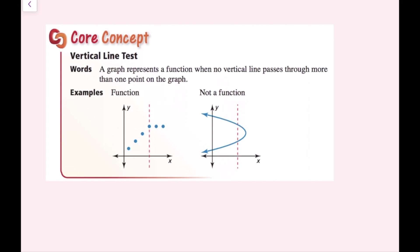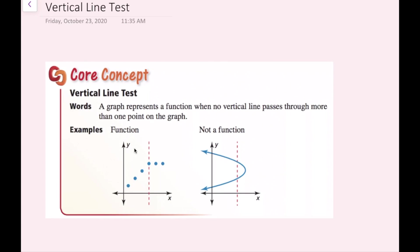Now we're going to talk about the vertical line test. A graph represents a function when no vertical line passes through more than one point on the graph. You can slide a ruler or pen along your paper, and if that vertical line ever goes through more than one point on the graph, it is not a function. If it only passes through one point throughout the entire graph, then it is a function. Here, any vertical line will only hit one point, so this is a function.